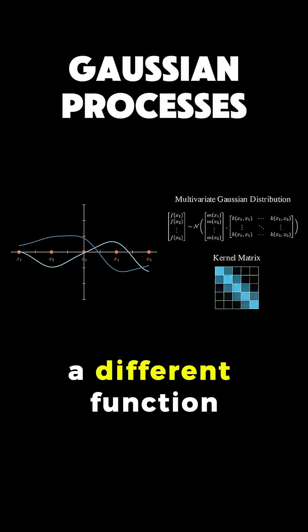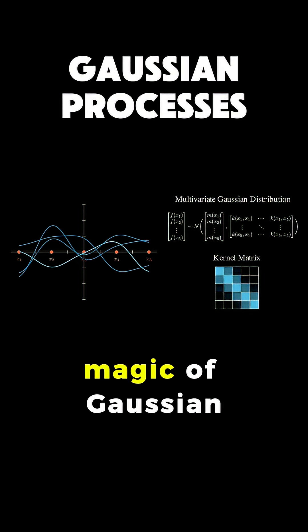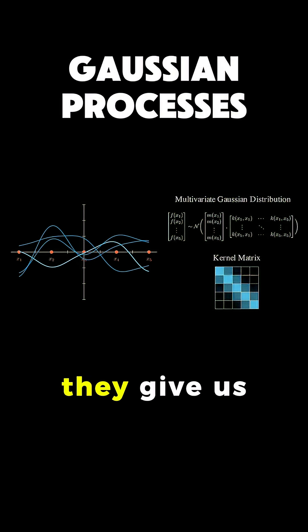Every time we sample, we get a different function, but all from the same distribution. This is the magic of Gaussian processes - they give us entire functions as samples.